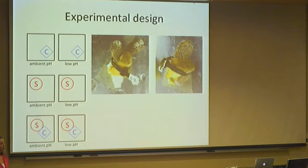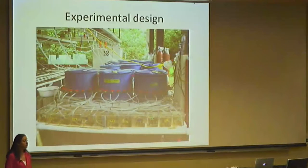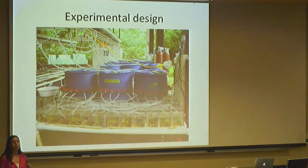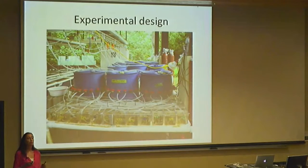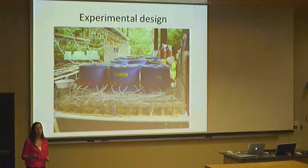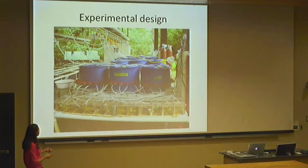Each one of these blue barrels contains water being pumped in from the bay right behind the wet lab. The big orange canisters in the background are CO2 tanks. To get the acidified water needed for some treatments, we would bubble carbon dioxide gas into these blue barrels to lower the pH, and then that water would be pumped into each of the little tanks where our coral and sponge replicates live.